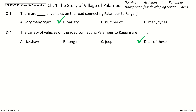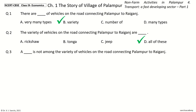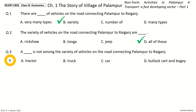Question 3: A dash is not among the variety of vehicles on the road connecting Palampur to Raiganj. The options are: Tractor, Truck, Car, Bullock Cart, and Bogie. And the answer is Car. So, a car is not among the variety of vehicles on the road connecting Palampur to Raiganj.